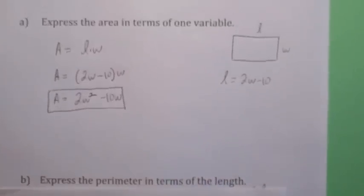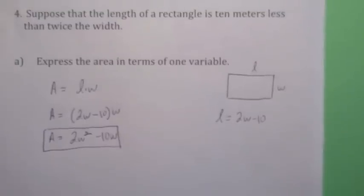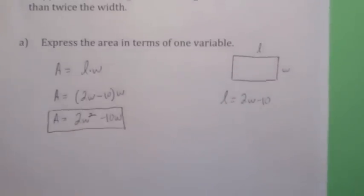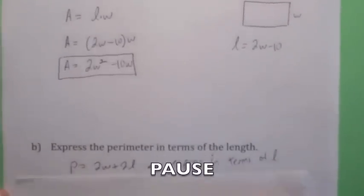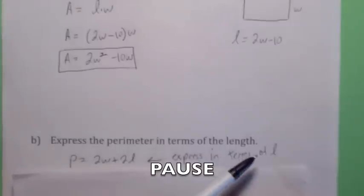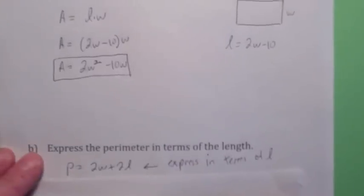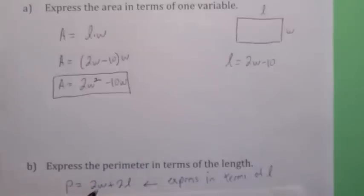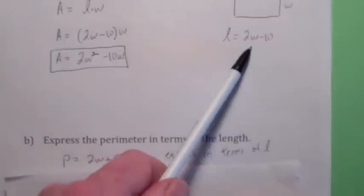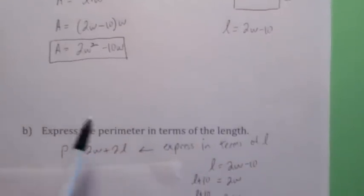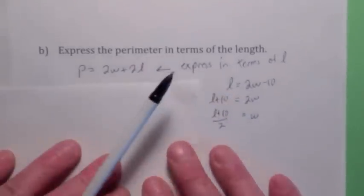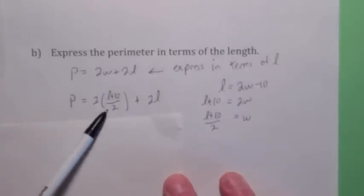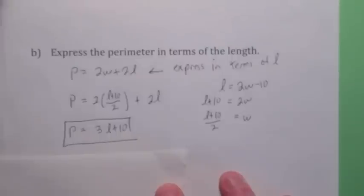Same problem, but now express the perimeter in terms of the length. The perimeter equals 2w plus 2L, but we need to express it in terms of L, so we have to get rid of w. Take the relationship L equals 2w minus 10, solve for w by adding 10 and dividing by 2, then plug this expression for w into the perimeter formula. Simplifying gives P equals 3L plus 10.